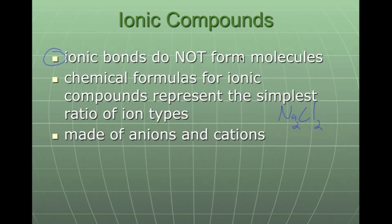Ionic compounds are made of anions and cations. Remember that anions are negative, cations are positive. Anions are going to be non-metals, and cations are going to be metals. The non-metals are going to take electrons from the cations, which are metals.